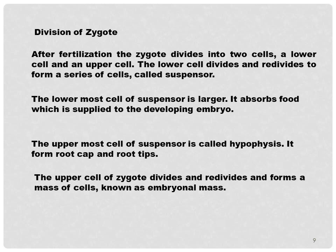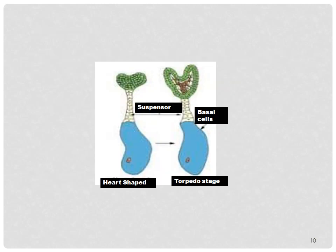The uppermost cell of the suspensor is called the hypophysis, and it forms the root cap and root tips. The upper cell of the zygote divides and re-divides to form a mass of cells known as the embryonal mass. The suspensor contains eight cells. Initially the embryo is heart-shaped, and then the torpedo stage occurs. The basal cells are present at the lower region.